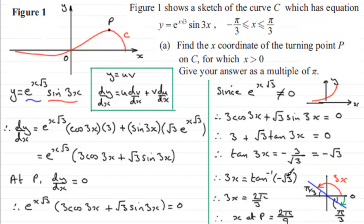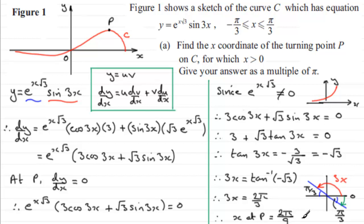The x-coordinate of turning point P is 2π/9. This last part on the quadrant diagram is a bit tricky — you could use a graphical method if you prefer, but I always recommend the quadrant method.